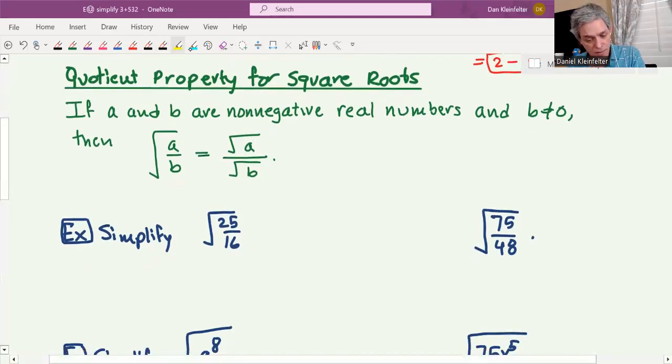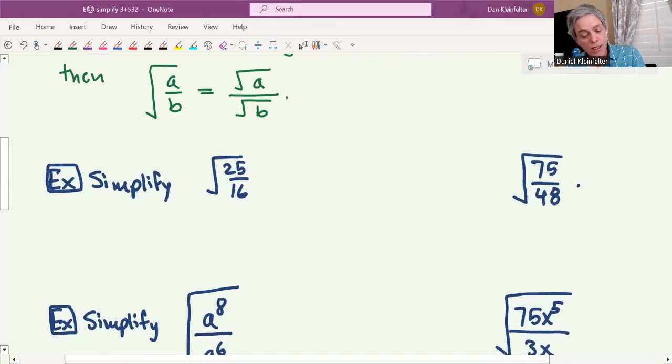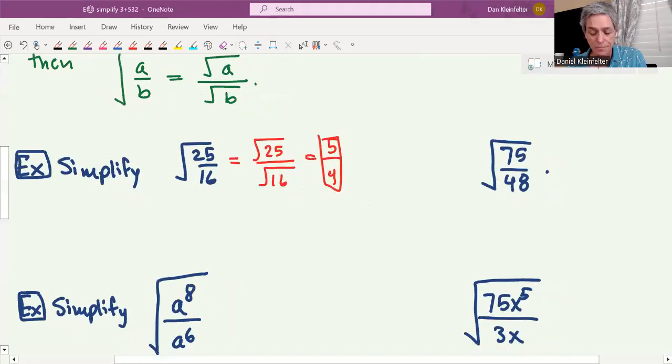Let's see how this works out with a couple of examples. We're going to try the square root of 25/16. This would be the same as the square root of 25 divided by the square root of 16. The square root of 25 is 5, the square root of 16 is 4, so our final answer is just 5/4.